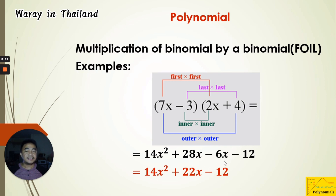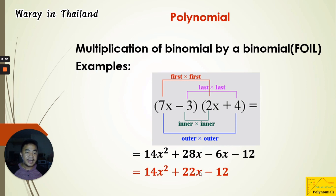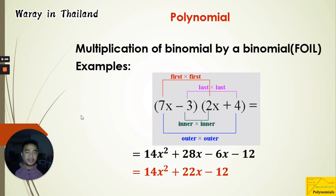We simplify because we have like terms. The variable x terms: 28x plus negative 6x gives positive 22x. So the product of those two binomials is 14x² plus 22x minus 12.